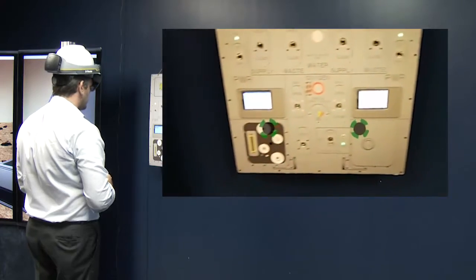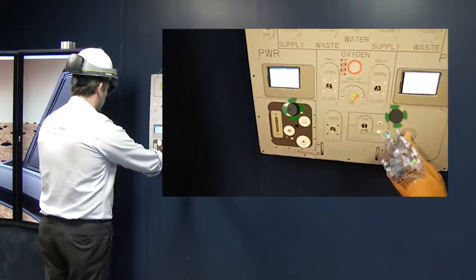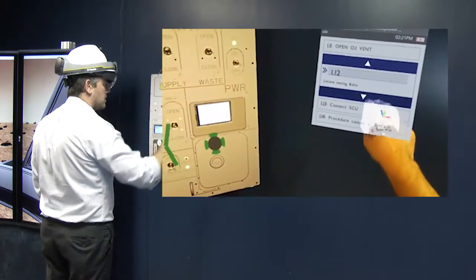And now I need to locate the mating bolts. So, again, the radicals are floating around the mating bolts. I've identified where they're at. One here. One here. Now that I've identified, on to the next procedure.